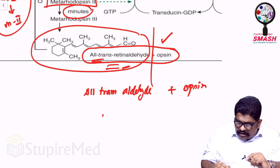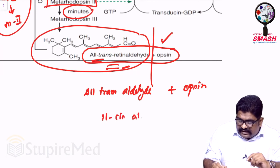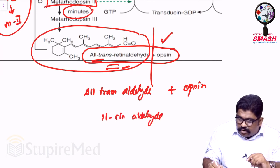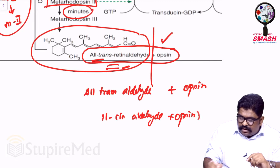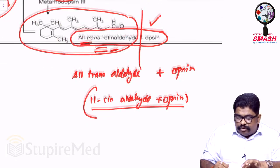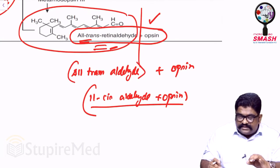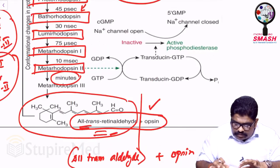When I break it, it will be all-trans aldehyde along with opsin. But when they have to be with opsin, it will be 11-cis aldehyde. For combining both to form rhodopsin, it is 11-cis aldehyde. But when you break them, what you get is all-trans aldehyde.